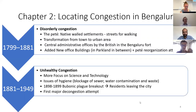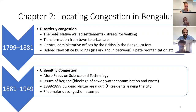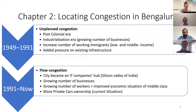The next layer of congestion was 'unhealthy congestion,' from 1881 to 1949. This period focused on health issues in dense Bengaluru. Science and technology became important, and economic status improved. However, the deteriorating infrastructure of the city led to the bubonic plague.